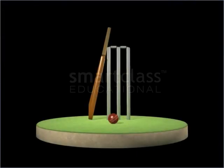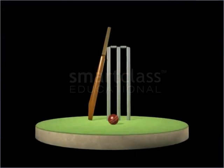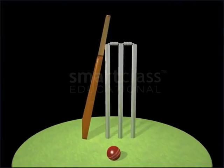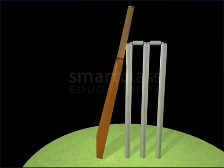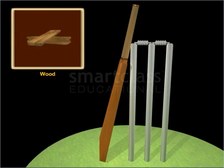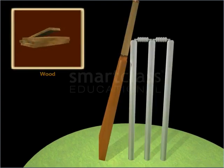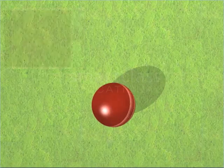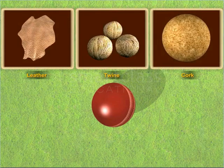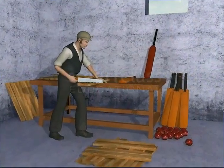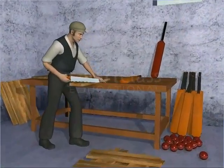The equipment currently used in cricket shows that even after undergoing numerous changes, cricket has still retained some of its original characteristics. Wood is still used to make bats and stumps, while leather, twine and cork are still used to make balls. Bats and balls are also handmade till date.